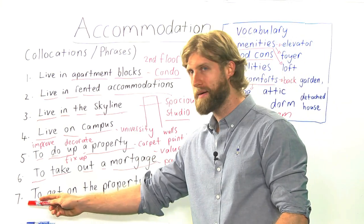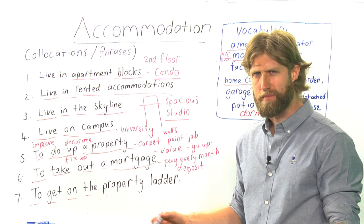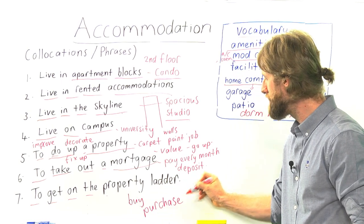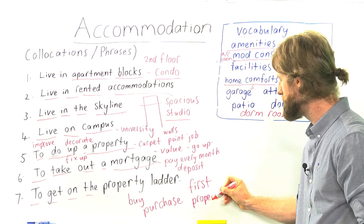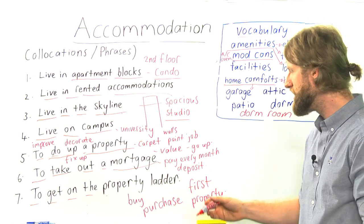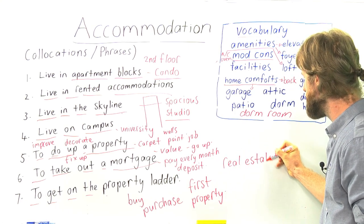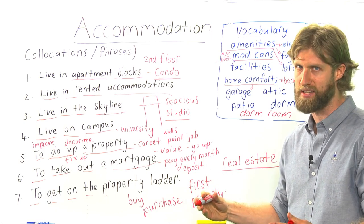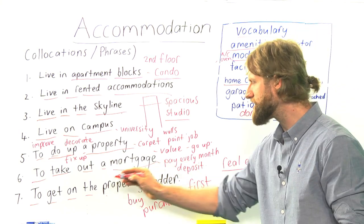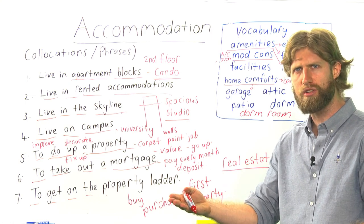Moving on to number seven: the phrase is to get on the property ladder. What does that mean? It means you are looking to buy or purchase your first property. Property, as we know, is an apartment or a house. To get on the property ladder means that now you are going into real estate. Real estate means property — houses and lands. You can say: I have just made my first million. I am looking to get on the property ladder. I am looking to buy a house or maybe an apartment, to rent it out or to own for yourself.